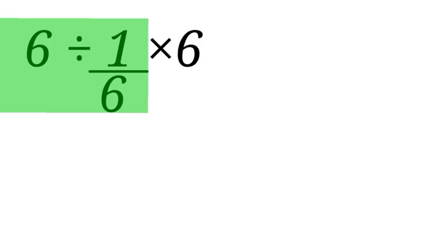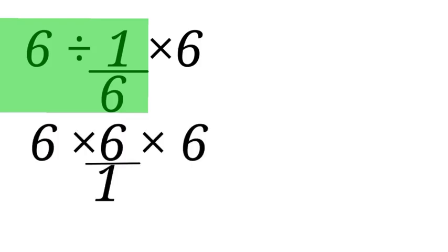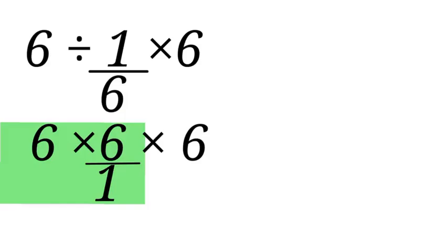So the reciprocal of 1 over 6 here is 6 over 1. Now let's multiply 6 by the reciprocal of 1 over 6. That would be 6 times 6, which equals 36.